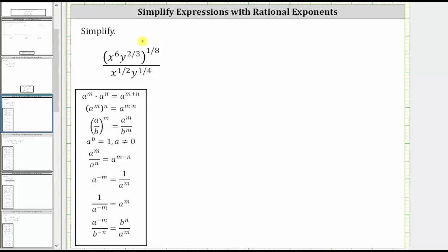We were asked to simplify the given expression. Looking at the expression, the first step is to simplify the numerator where we have powers raised to powers. Remember when we have powers raised to powers, we multiply the exponents, which means you multiply the exponents inside the parentheses by 1 eighth in the numerator.